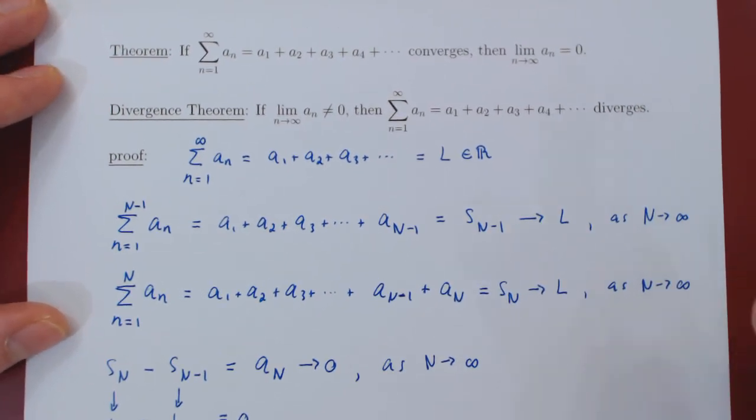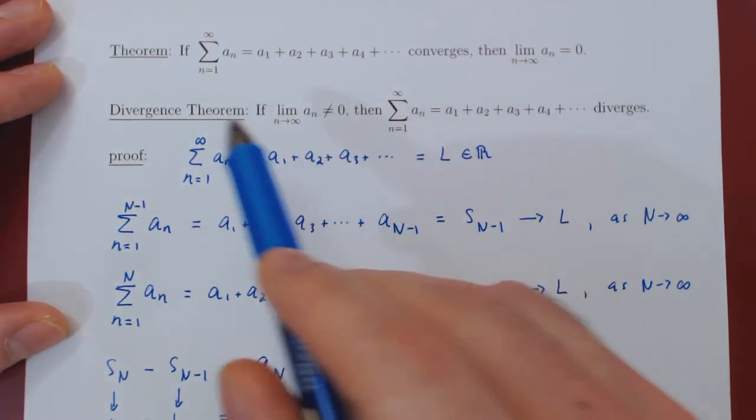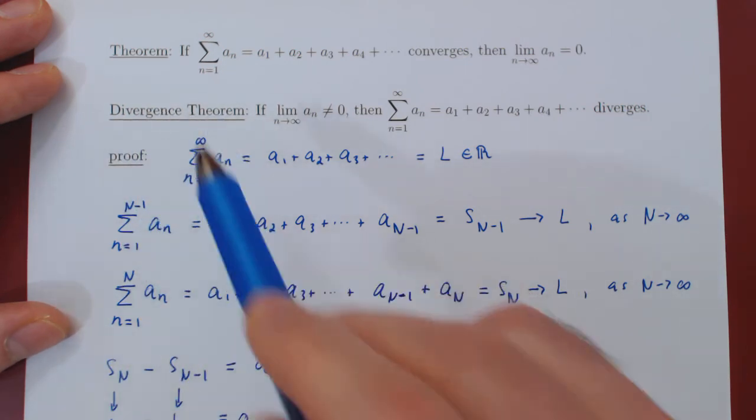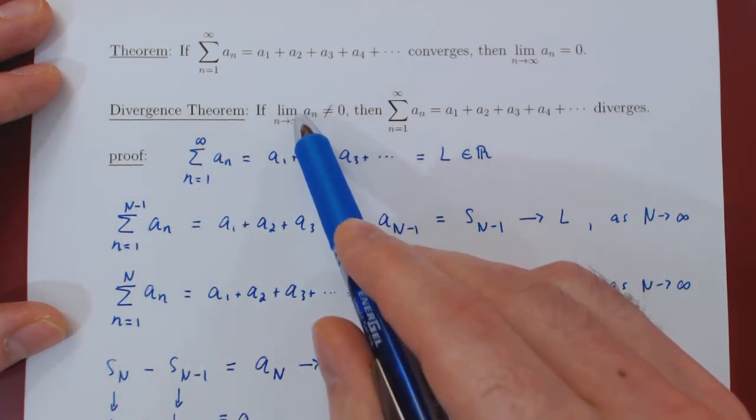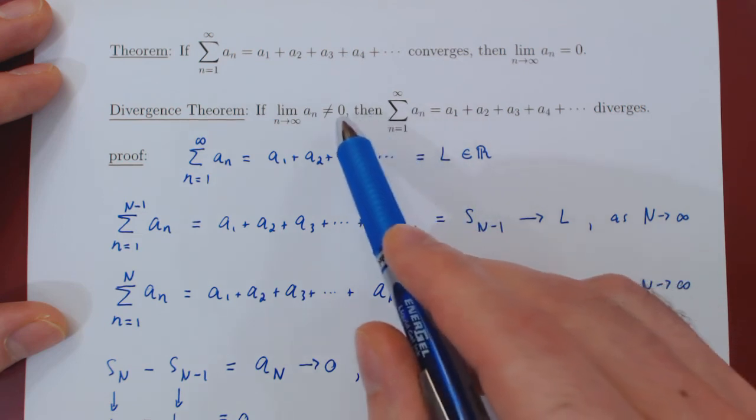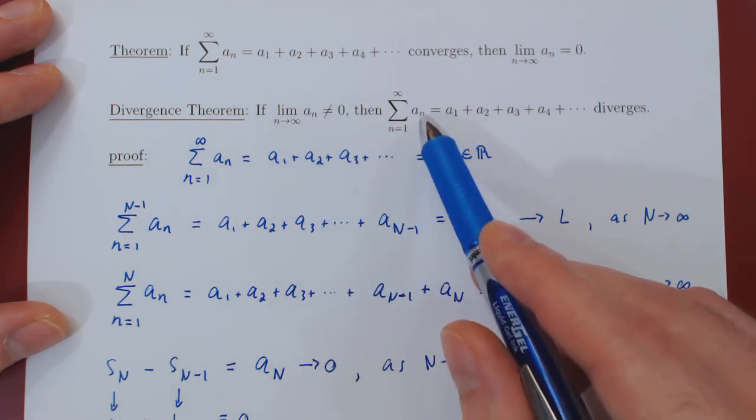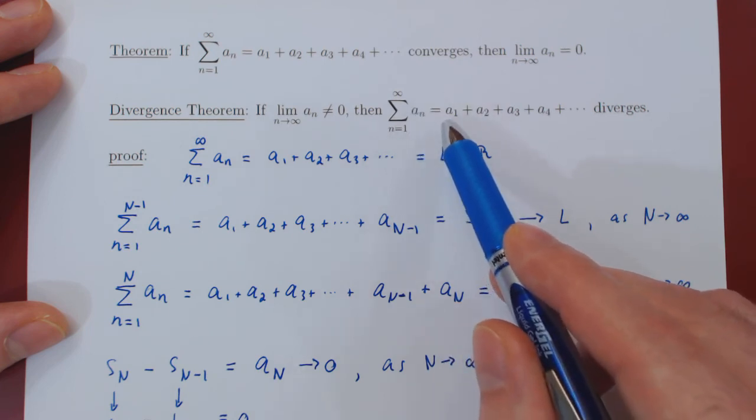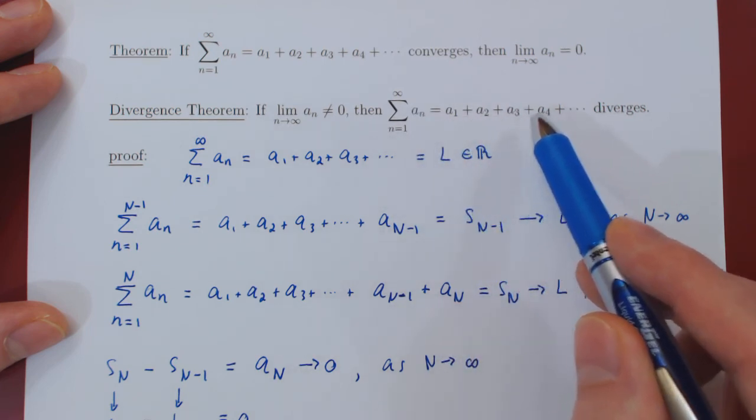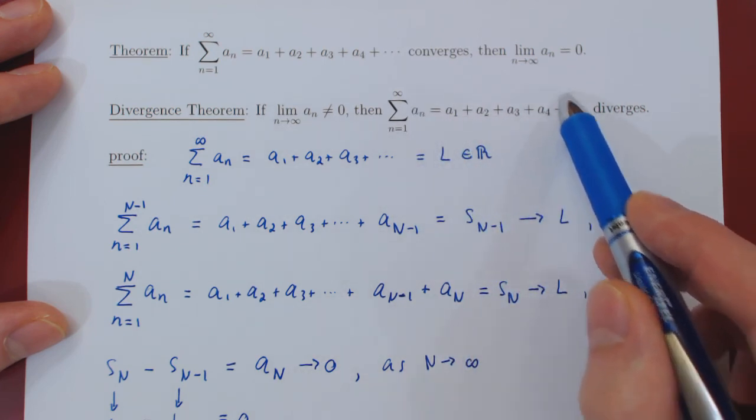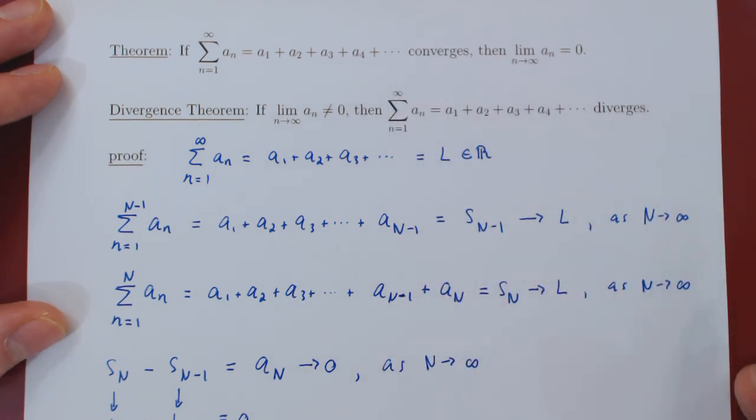And again I want to emphasize here the intuition behind the divergence theorem. If the individual terms of the series do not shrink to 0 as n tends to infinity, then they are too large, and so it is impossible to add these infinitely many real numbers and so the corresponding series simply diverges.